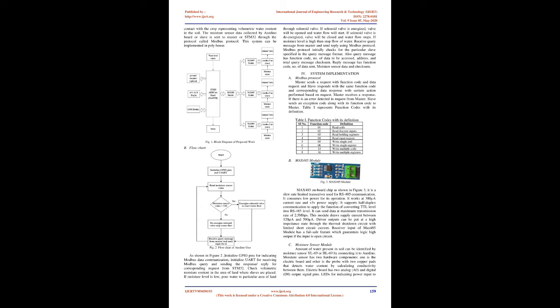Flow chart: Initialize GPIO pins for indicating Modbus data communication. Initialize UART for receiving Modbus queries and sending the response or reply for corresponding requests from STM32. Check volumetric moisture content in the area of land where slaves are placed. If moisture level is low, pour water to that particular area through the solenoid valve. If the solenoid valve is energized, the valve opens and water flow starts. If the solenoid valve is de-energized, the valve closes and water flow stops. If moisture level is high, stop the flow of water. Receive query message from master and send reply using Modbus protocol.